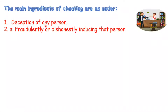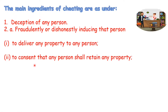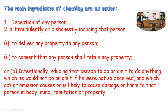The main ingredients of cheating are: first, a deception of any person — A went to the bookstore to deceive Z; second, a fraudulent or dishonest inducing of that person to deliver any property or to consent to return any property; third, intentionally influencing someone to deliver property without payment; fourth, intentionally inducing that person to act who would not otherwise be so deceived, causing or likely to cause damage or harm to that person in body, mind, reputation, or property.